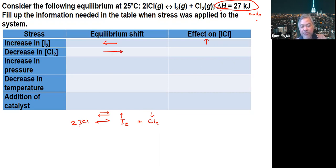Since the forward reaction is favored, you utilize ICl, so its concentration decreases.